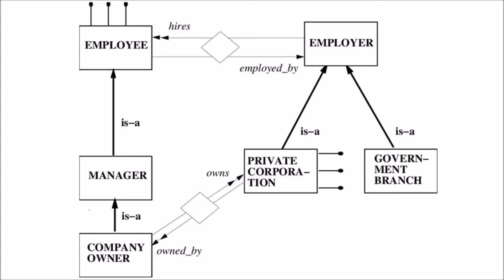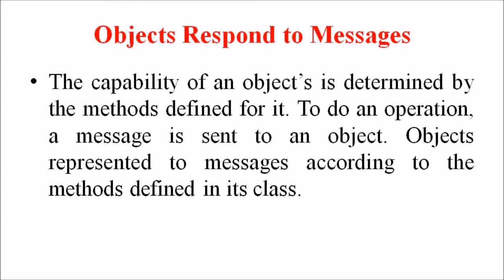Next, we are discussing how objects respond to messages. The capability of an object is determined by the methods defined for each. To do an operation, a message is sent to an object. Objects respond to messages according to the methods defined in their class.